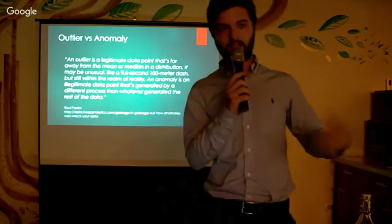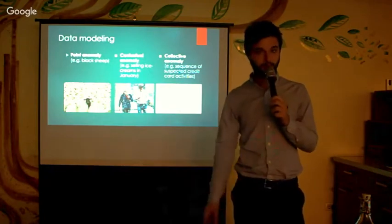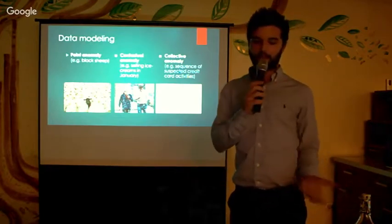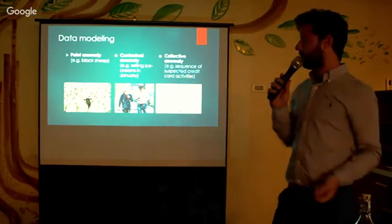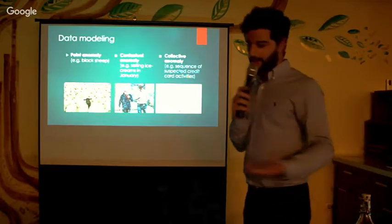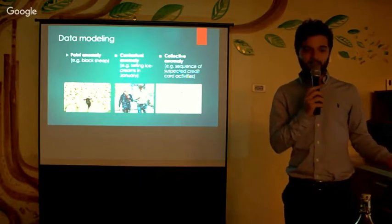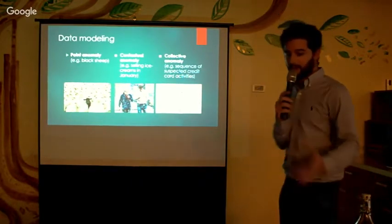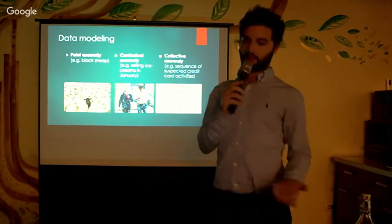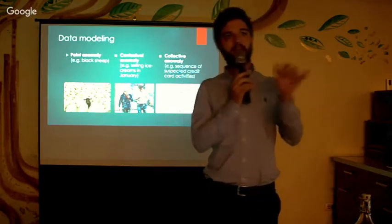We can classify anomalies into three major groups. The simplest is the point anomaly, where each row represents one entity. But sometimes you want to represent some context — for example, when doing anomaly detection on ice cream sales, a spike doesn't mean anything unless you specify the context. And then there's the collective anomaly, more like fraud detection, where it's the whole sequence of events that happen together that is suspicious.